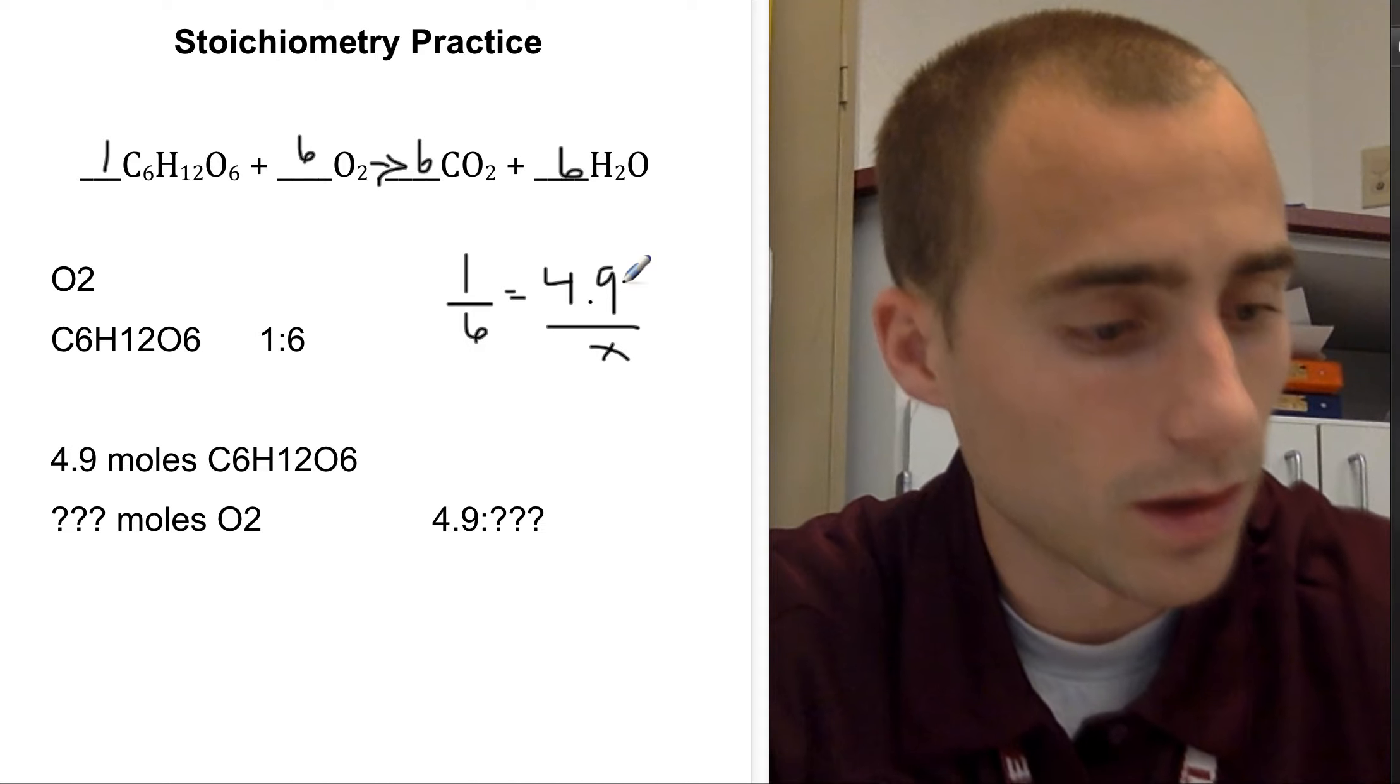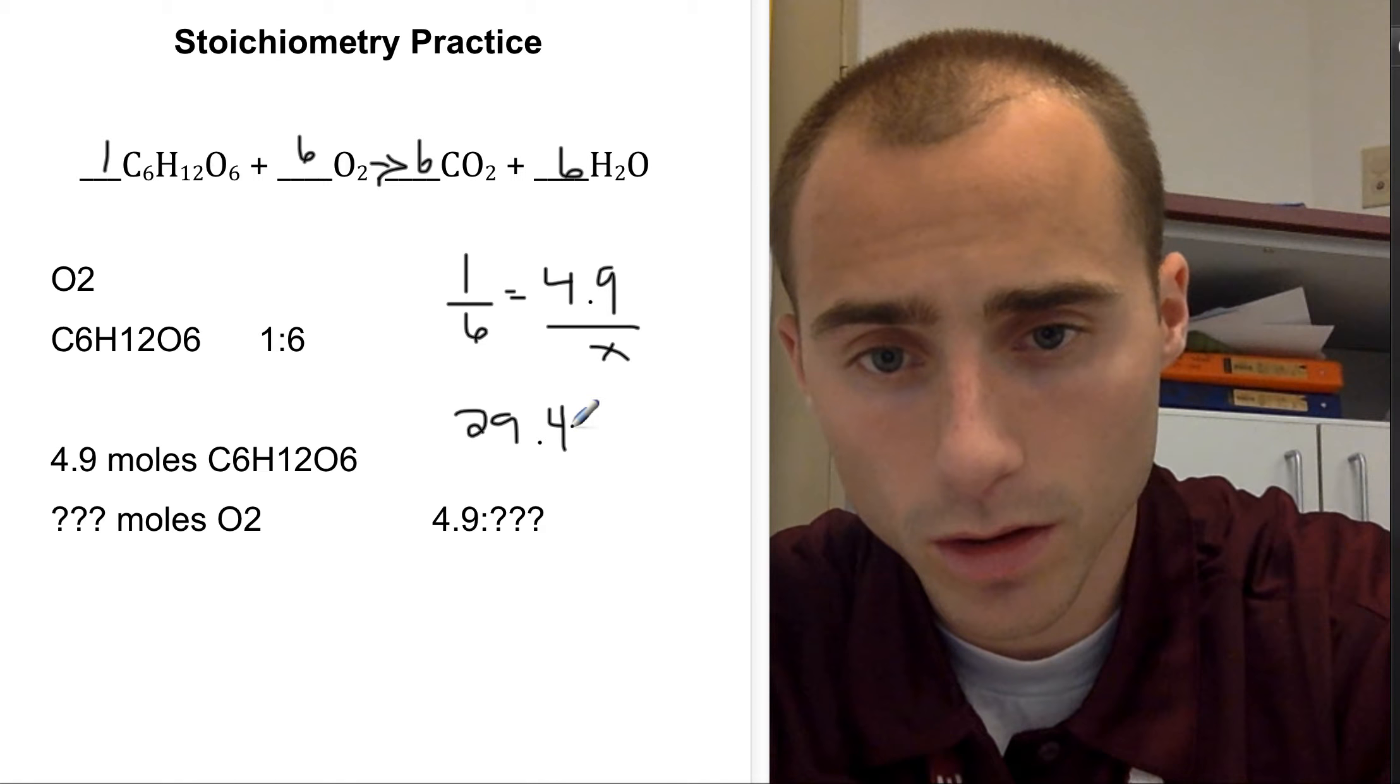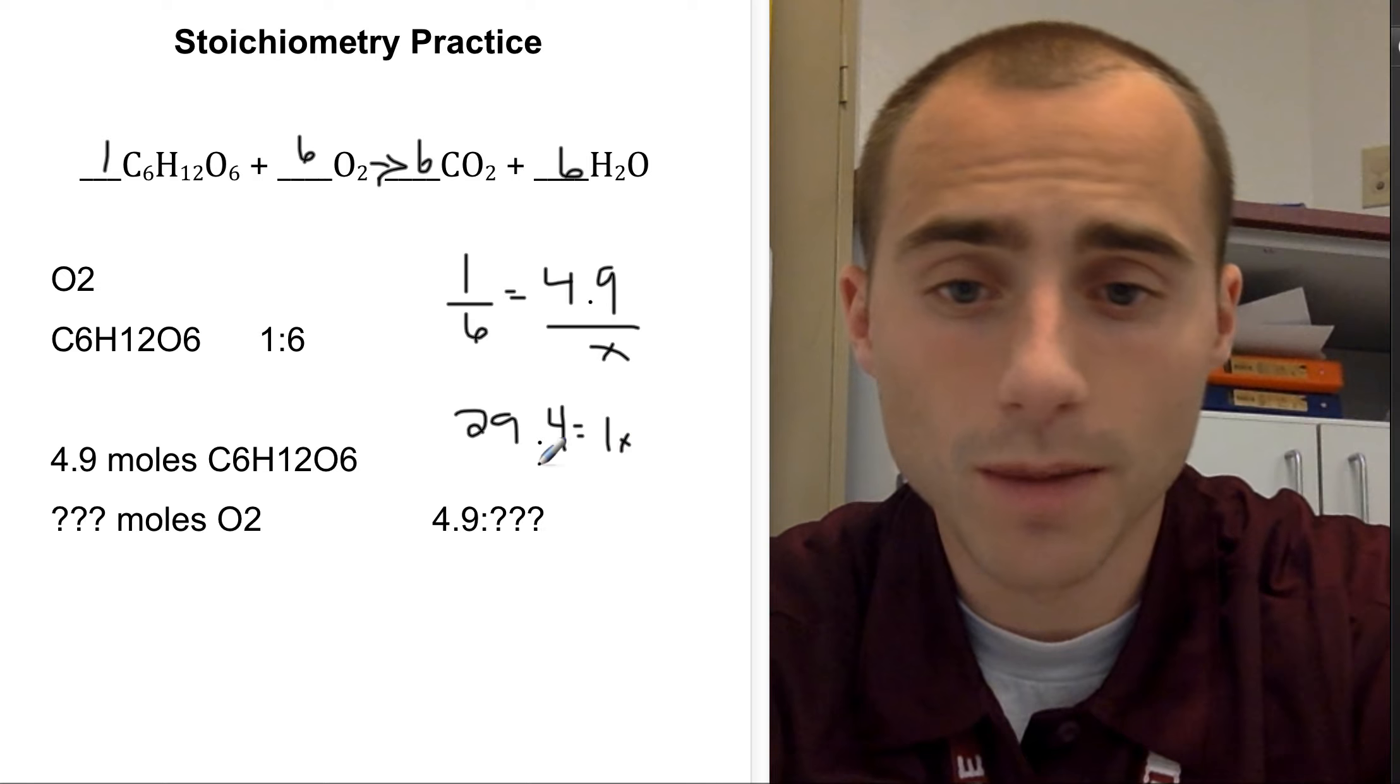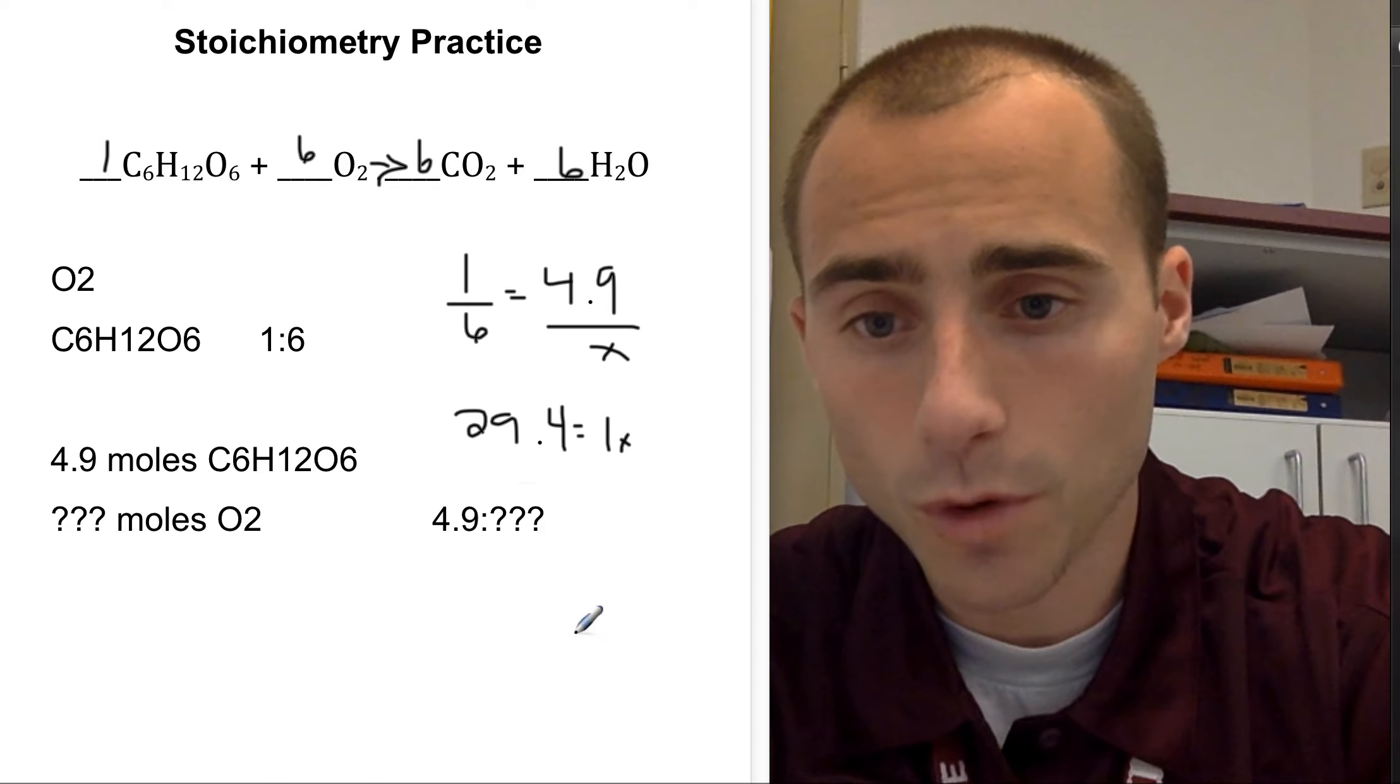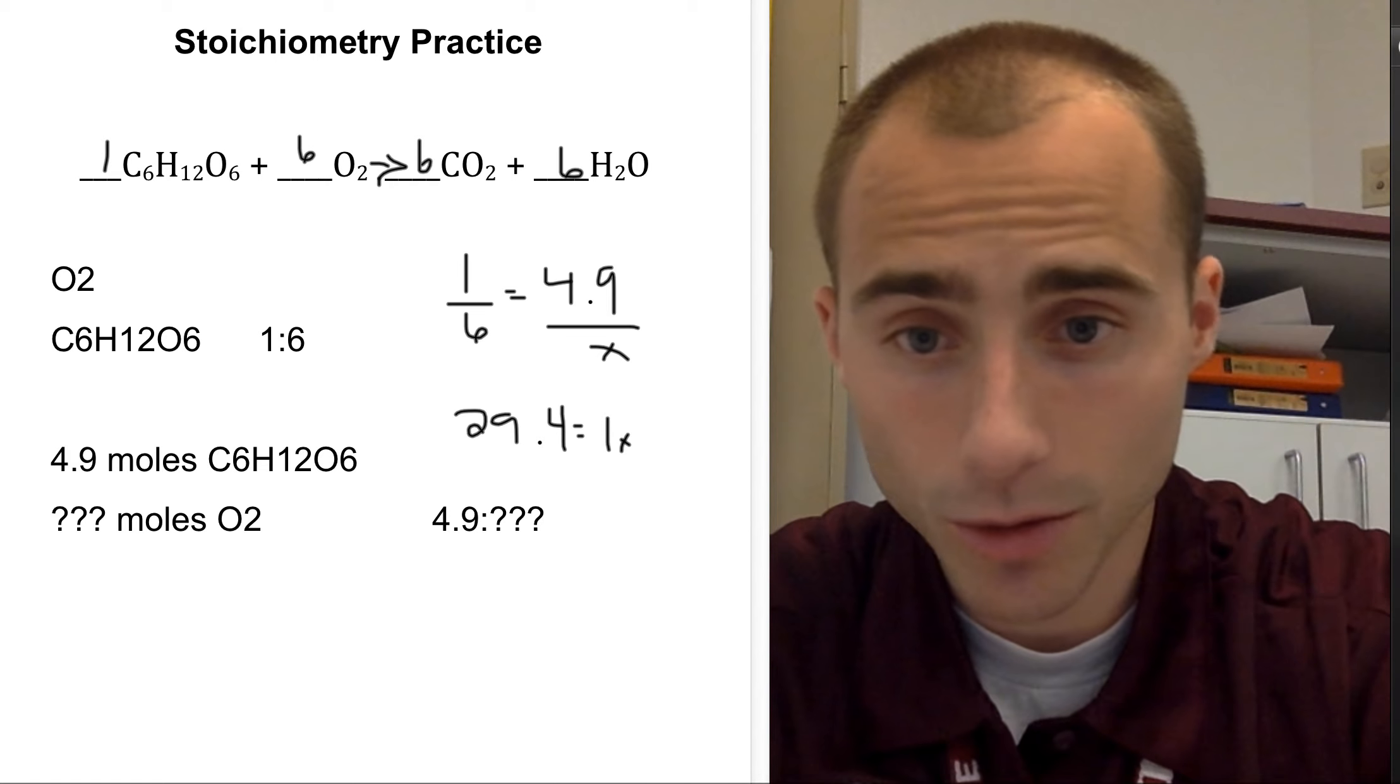6 times 4.9 is 29.4, which equals 1X. Then all we do is divide by 1. So your answer ends up being, to oxidize 4.9 moles of glucose, we would need a remarkably large 29.4 moles of oxygen.